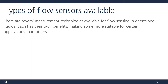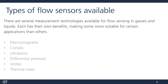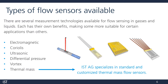There are many different measurement technologies available for flow, and some are more suitable than others for certain applications. Common ones include electromagnetic, Coriolis, ultrasonic, differential pressure, vortex, and thermal mass. At IST, we specialize in standard and custom thermal mass flow sensors. Let's get into how these sensors work.